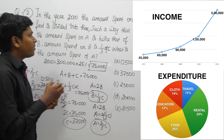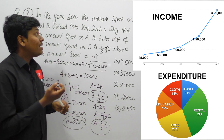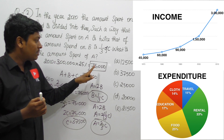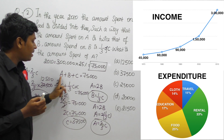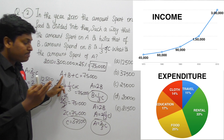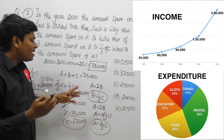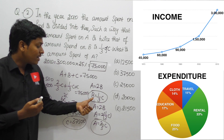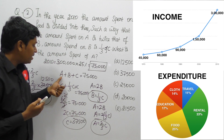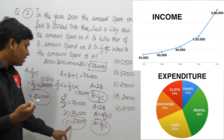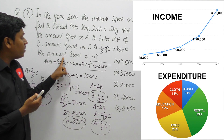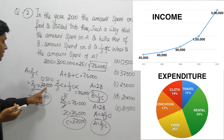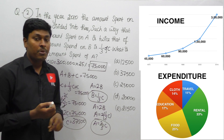Interesting question — the concept is most important. In 2010, the amount spent on food is 75,000, divided into A, B, and C. Amount spent on A is twice B and B is one-third of C. By converting all expressions in terms of C, we found C = 37,500. Since A = 2/3 × C, the amount spent on A is 25,000.